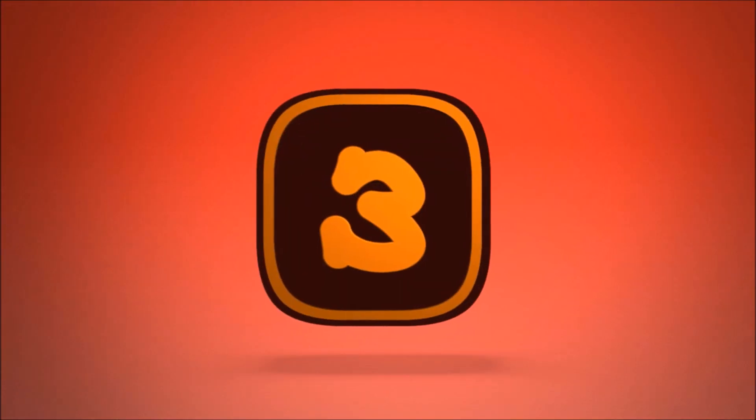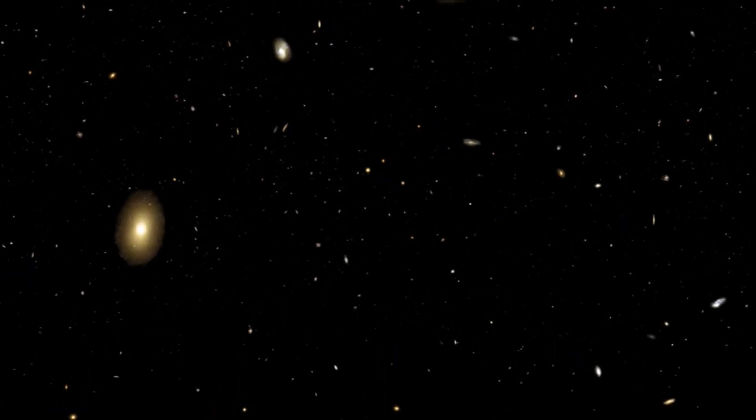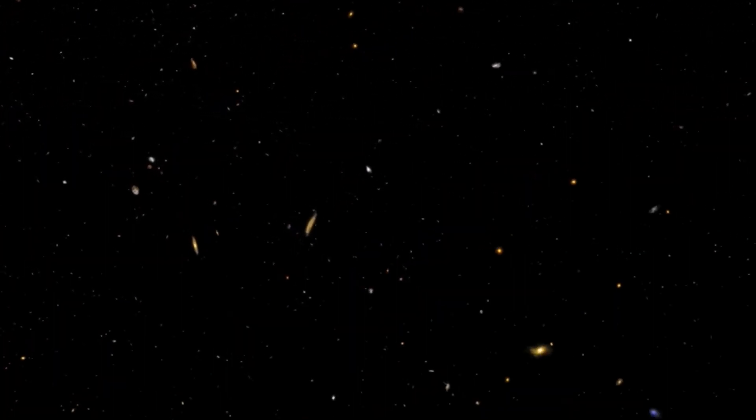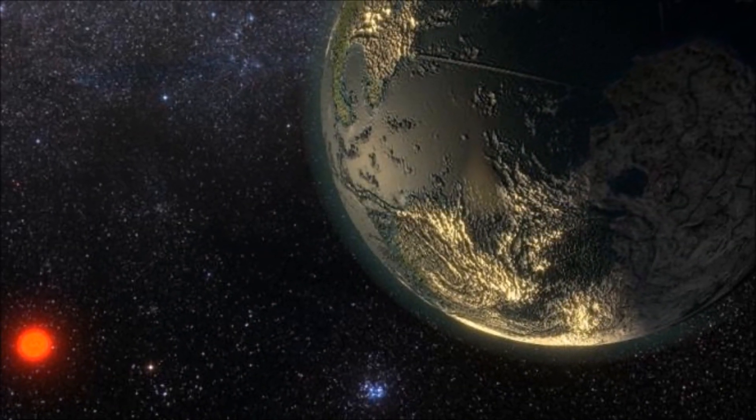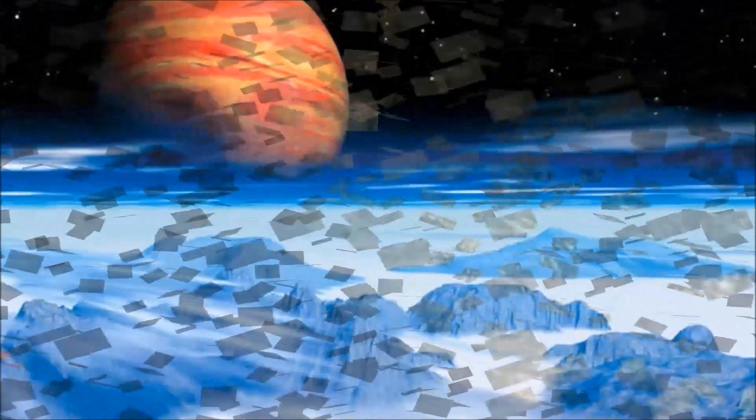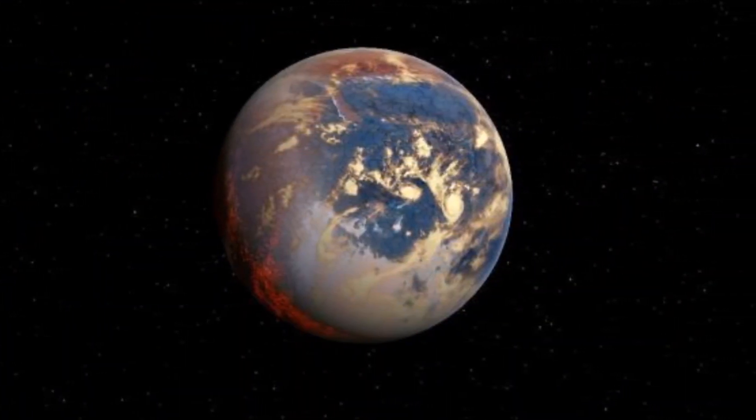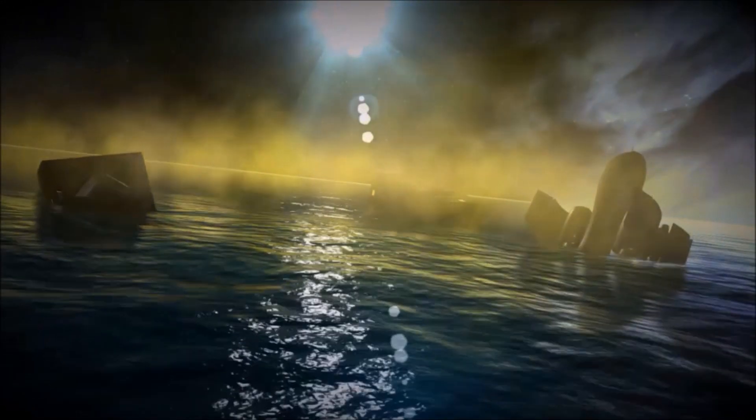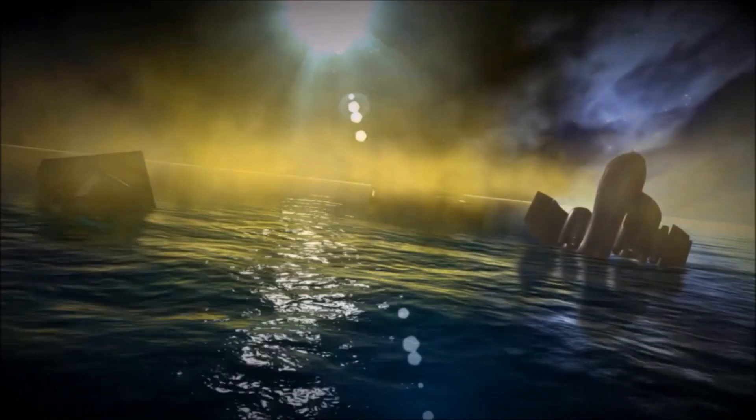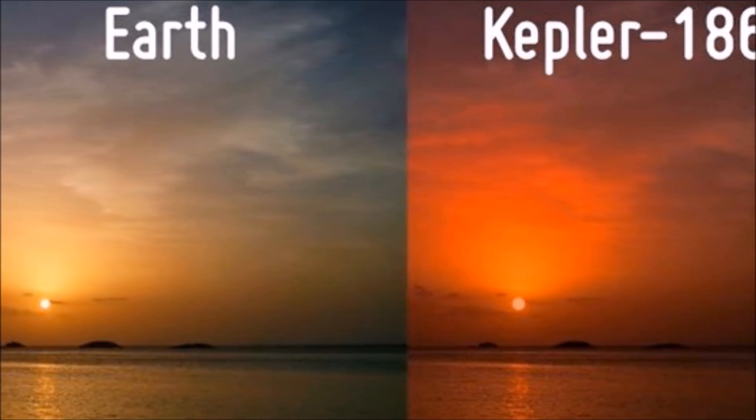Number 3: Kepler-62f. Nearly 1,200 light-years away in the constellation of Lyra is the star Kepler-62 and the planet Kepler-62f. Kepler-62f is a super-Earth exoplanet that orbits the outer area of the habitable zone. There's a good chance that it's a rocky or ocean-covered planet, making it a great but far-away contender for a planet that can sustain human life.